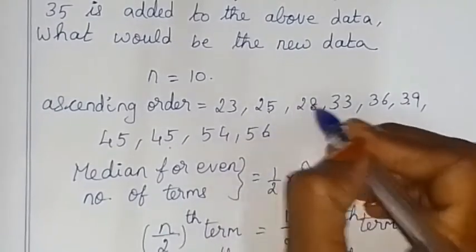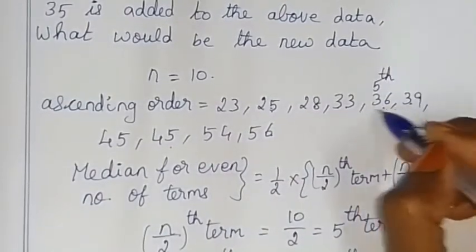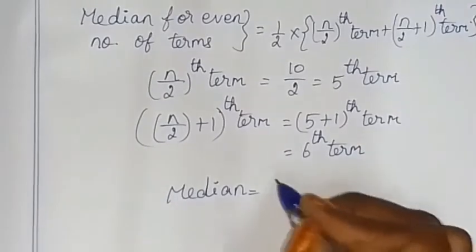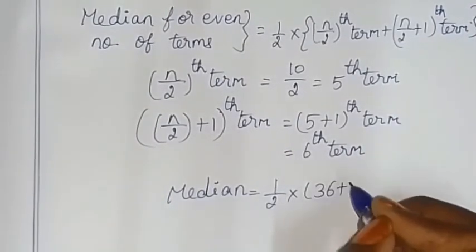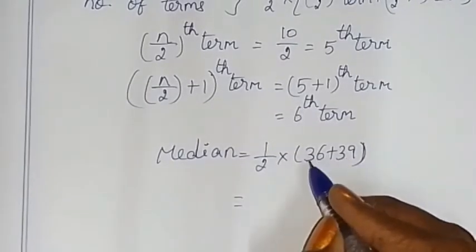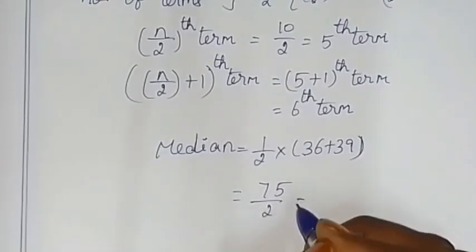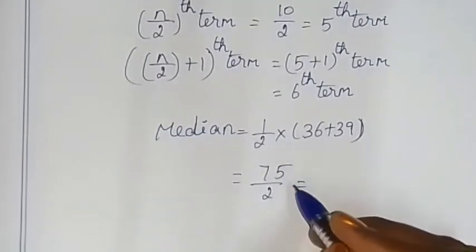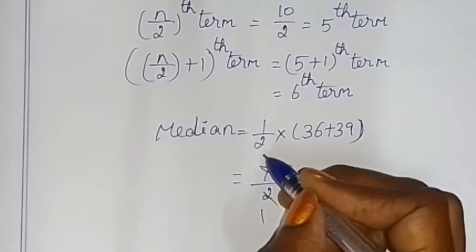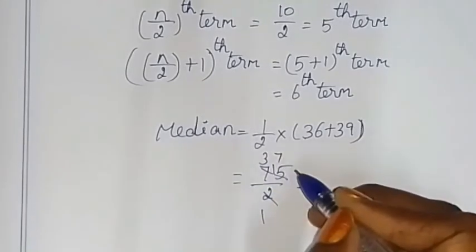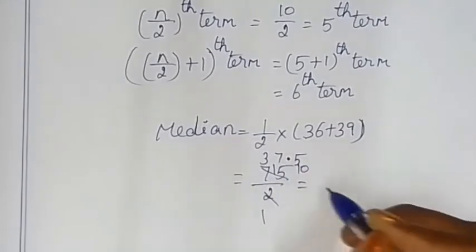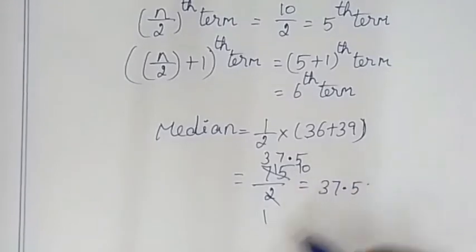The 5th term is 36 and the 6th term is 39. So median = (1/2) × (36 + 39) = 75/2 = 37.5. So 37.5 is the median.